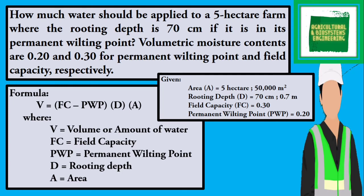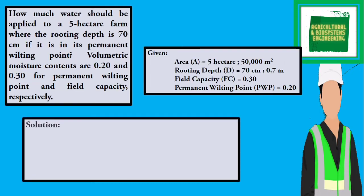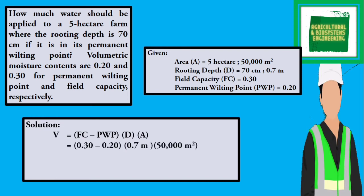Now we proceed with our solution. We simply use direct substitution. Substituting values, volume is equal to the difference of field capacity 0.30 minus the permanent wilting point 0.20, multiplied by the rooting depth of 0.7 meters, times the area of 50,000 square meters. Solving gives us a final answer of 3,500 cubic meters.